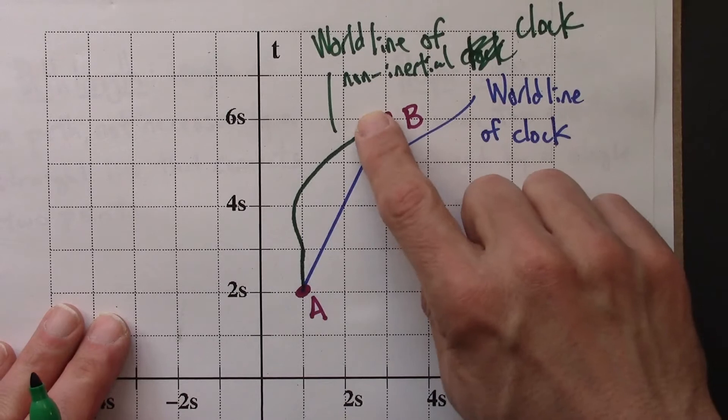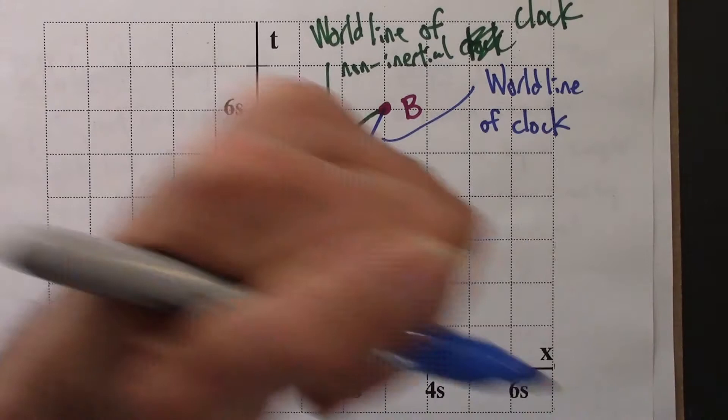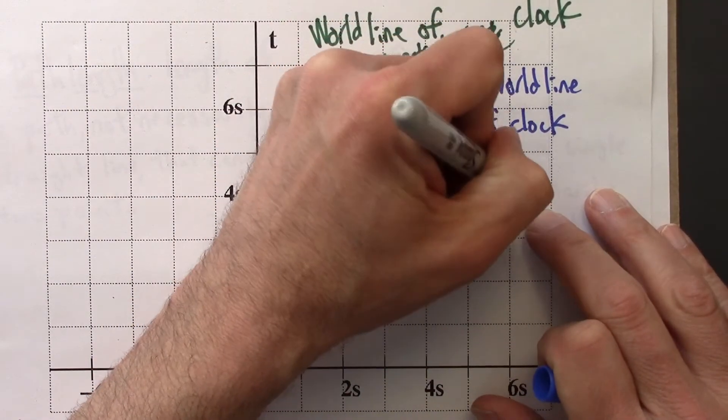So non-inertial just means that it does not move at a constant velocity. And here, this is a world line of an inertial clock.